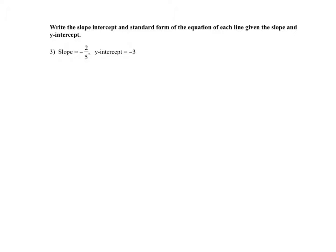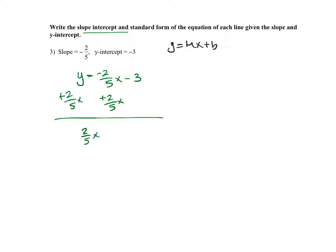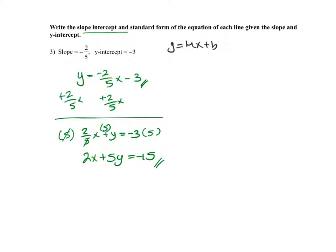This problem asks for both slope-intercept form and standard form. I already know my slope and intercept, so I substitute into y equals mx plus b: y equals negative 2/5 x minus 3. Adding 2/5 x on both sides gives 2/5 x plus y equals negative 3. Since we need integers, I multiply everything by 5 to get 2x plus 5y equals negative 15. That's my standard form.